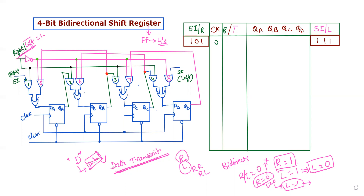The right-shifting operation and the left-shifting operation each use a set of AND gates. The first AND gate set is for right shifting and the second AND gate set is for left shifting. The control input R is applied to the AND gates. When the clock pulse is applied, we get the transferable output from the flip-flop.